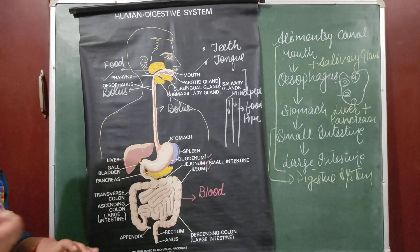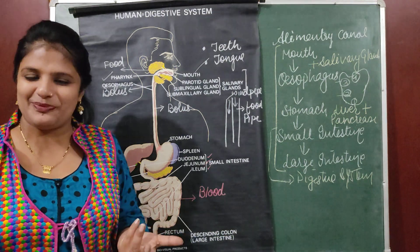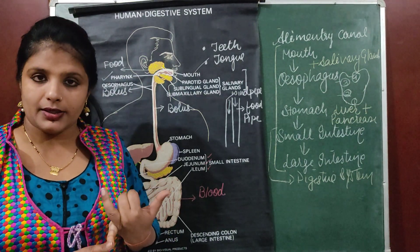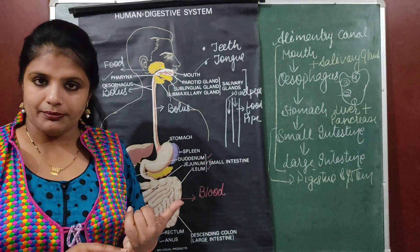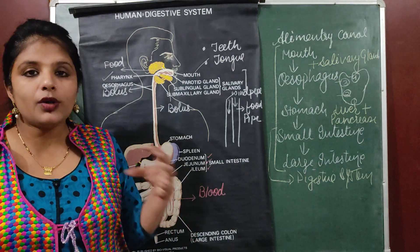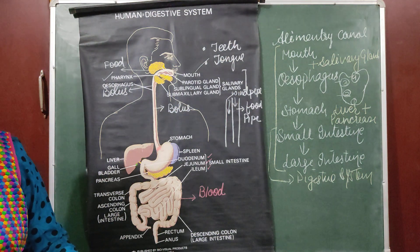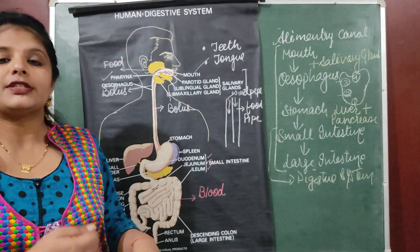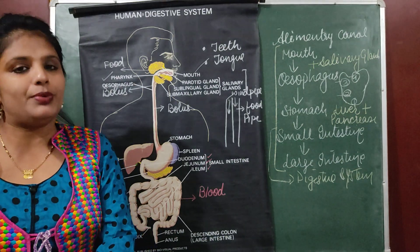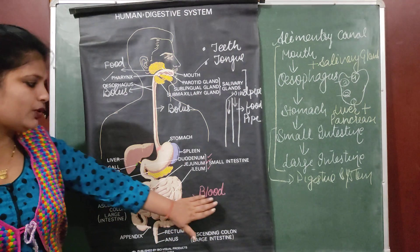Nutrients are absorbed from the small intestine into the blood. For example, if you have eaten aloo paratha with butter and vegetables: the aloo paratha is carbohydrate, butter is fat, curd and mixed vegetables provide vitamins and minerals. We do not pass the whole food into the blood — from the paratha we extract carbohydrate in the form of glucose, from butter we extract fatty acids, and from protein we extract amino acids, which are then sent to the blood.